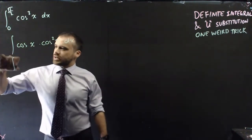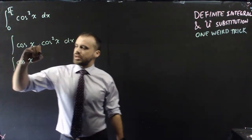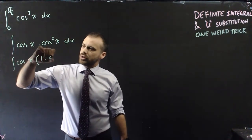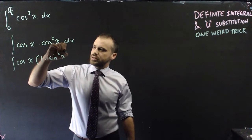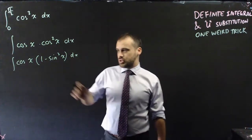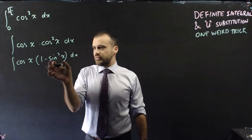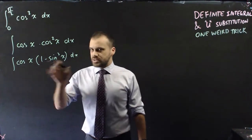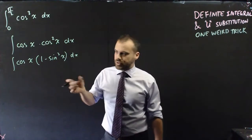And realize that cos cubed x can be written as cos x times cos squared x. And of course, that can be written as cos x times 1 minus sine squared x with respect to x. And now that looks like u substitution, because we're going to be able to sub u in for sine x, and cos x is going to be some multiple of that derivative.